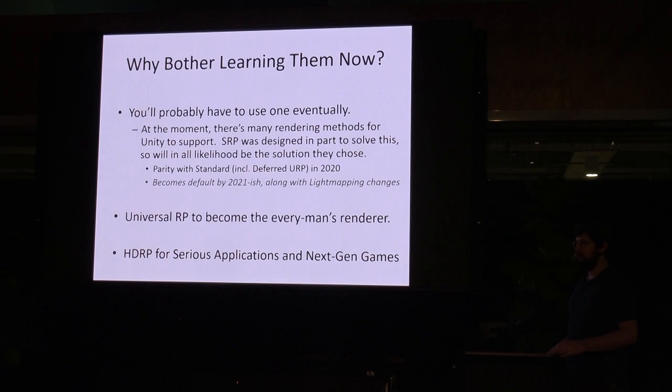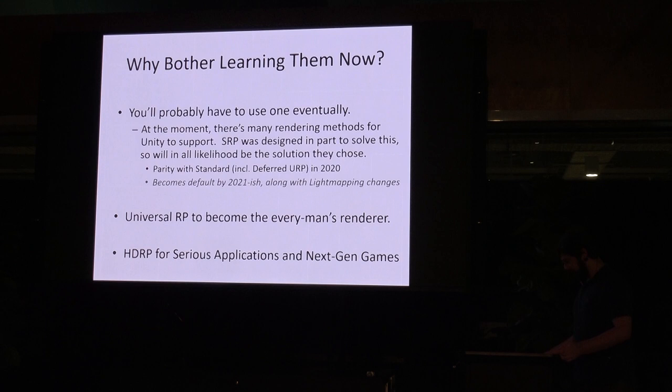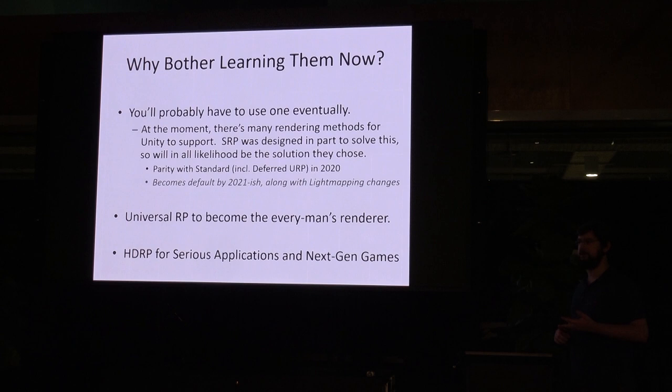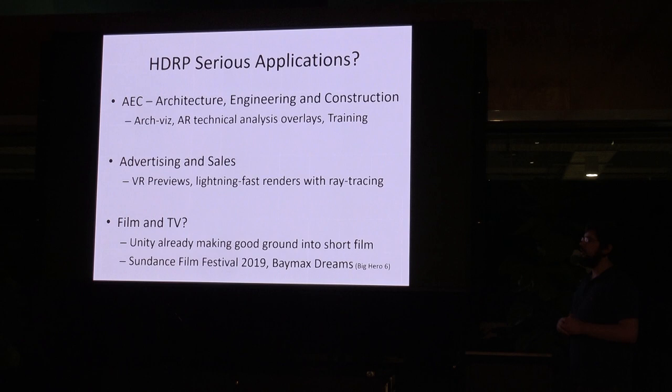The Lightweight Render Pipeline, now called the Universal Render Pipeline, is probably going to be the every man's renderer. If you're an indie developer, that's likely what you'll use — it'll cover most use cases: laptops, PCs, mobiles, tablets, and so on. The High Definition Render Pipeline is for serious applications and next-gen games: PlayStation 4 Plus, Xbox One X, as well as next generation consoles like PlayStation 5. Serious applications have been growing for the last five to ten years, roughly where everyone expected.